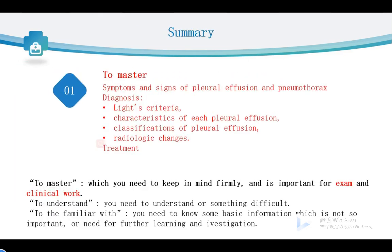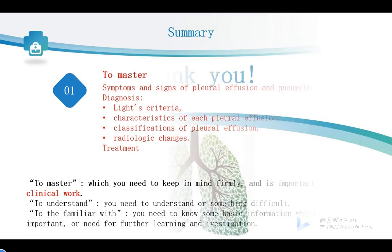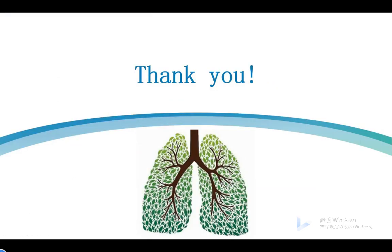Now let's do a summary for this class. The most important contents include the symptoms and signs of pleural effusion and pneumothorax, Light's criteria for pleural effusion diagnosis, the characteristics of each type of pleural effusion, the classification of pleural effusion and pneumothorax, and finally the radiologic changes in pleural effusion and pneumothorax. That's all for this class. Thank you.